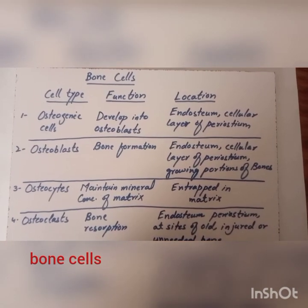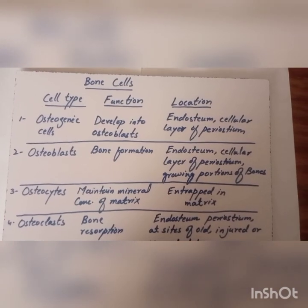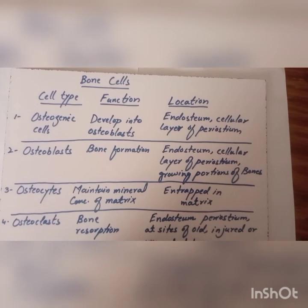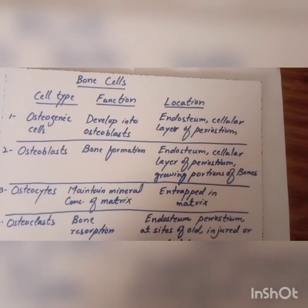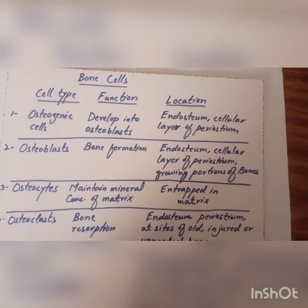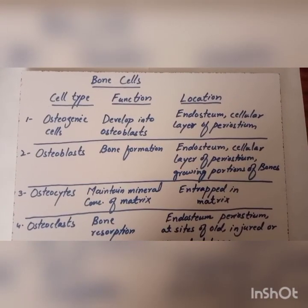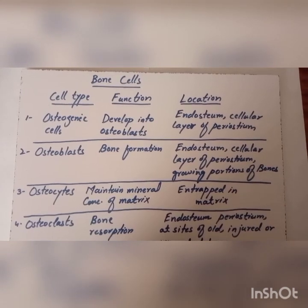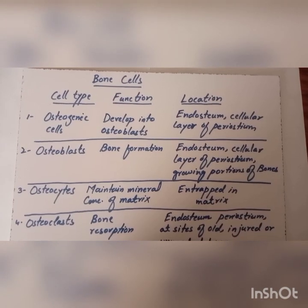These are the bone cells, their functions and location. There are four types. First, osteogenic cells develop into osteoblasts. They are present in the endosteum, cellular layer of periosteum, and growing portions of the bones. Second, osteoblasts perform bone formation.